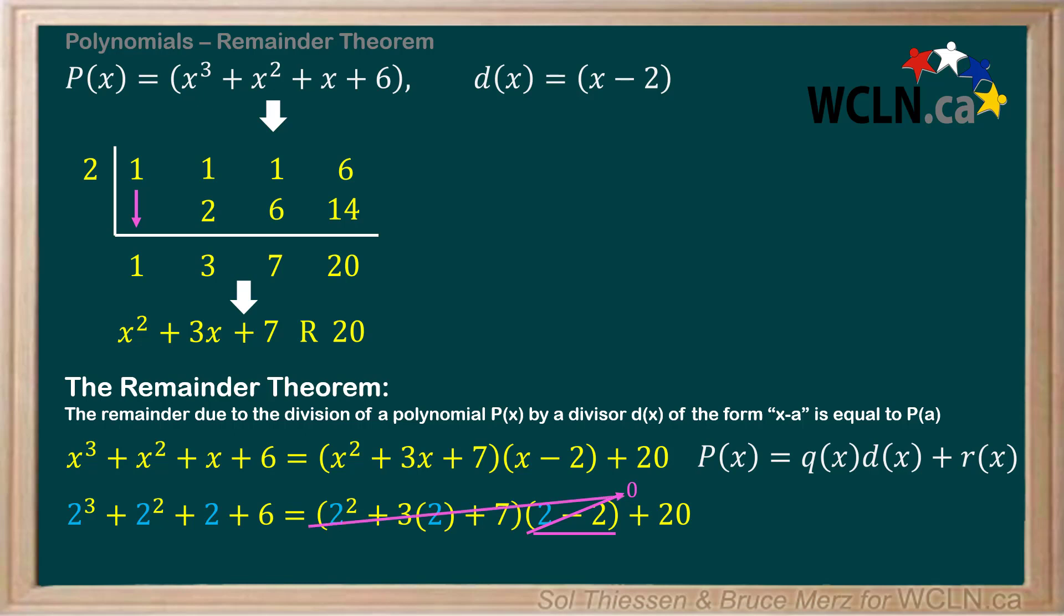This leaves us with just 20 on the right-hand side. Remember that 20 is the remainder from dividing our polynomial P(x) by the divisor x minus 2.